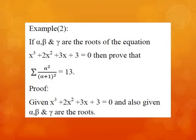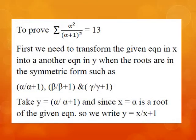Now we have another example. If α, β, and γ are the roots of the equation x³ + 2x² + 3x + 3 = 0, then prove that σ[α/(α+1)]² = 13. Proof: We are given x³ + 2x² + 3x + 3 = 0, a cubic equation with roots α, β, and γ. In order to prove that σ[α/(α+1)]² = 13, we first need to transform the given equation in x into another equation in y whose roots are α/(α+1), β/(β+1), and γ/(γ+1).